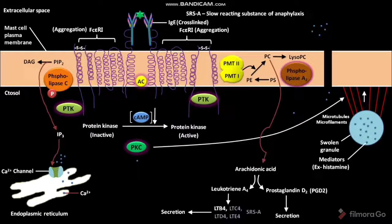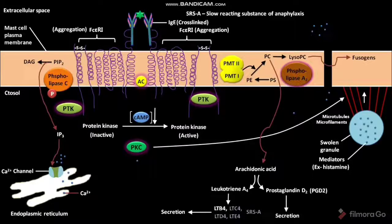The lysophospholipids in the sensitized mast cell plasma membrane are converted into fuzogens. These fuzogens facilitate the fusion of the mast cell plasma membrane with the membrane of granules. As a result, degranulation occurs. So, the fuzogens also facilitate degranulation.